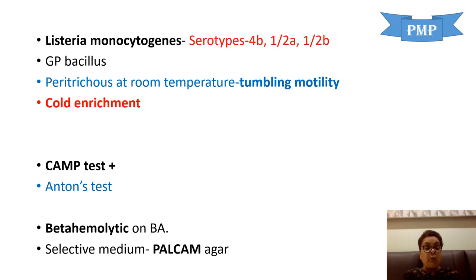When grown on blood agar, Listeria is beta-hemolytic. The selective medium used for isolating it is the PALCAM agar. So very important to remember: cold enrichment, tumbling motility, CAMP and Anton's test positive, and PALCAM agar as the selective medium.